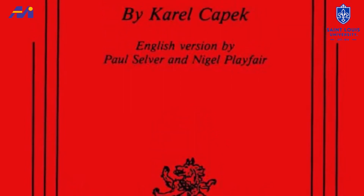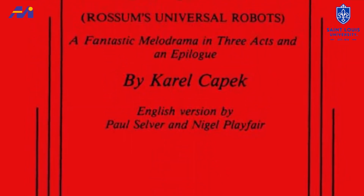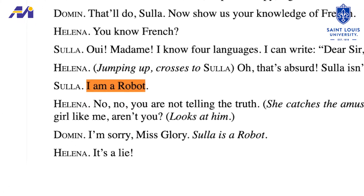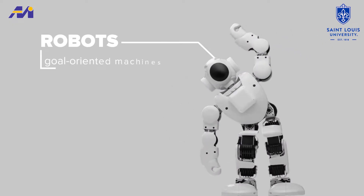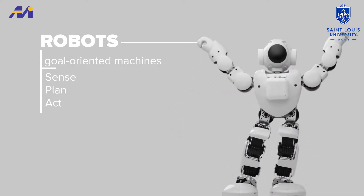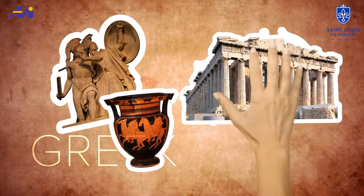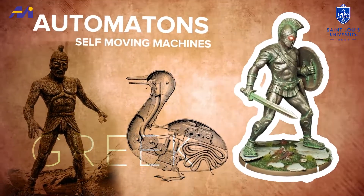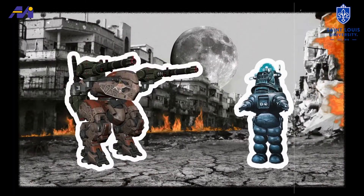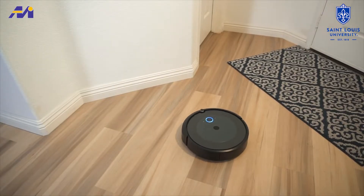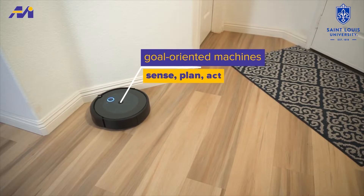The Czech playwright Karel Čapek is credited with coining the word 'robot' in his 1920 play Rossum's Universal Robots. But the concept of robots as goal-oriented machines that can sense, plan, and act has been around for centuries. The ancient Greeks created stories about automatons, which were self-moving machines that could perform tasks. In science fiction, robots were machines that would rebel and end humanity. But science fiction aside, a robot is a goal-oriented machine that can sense, plan, and act.